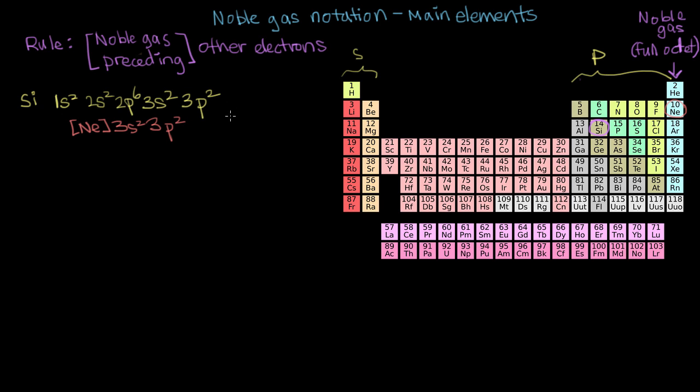So if we compare these two ways of writing our electron configuration, you can see that these electrons right here, so everything up to 3s2, 3p2, that gives us the electron configuration for neon. And so we don't have to write that, we just write neon and assume that whoever's reading it knows what the electron configuration for neon is.